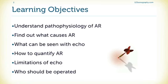The learning objectives are: understanding the pathophysiology of aortic regurgitation, finding out what the causes are, what can be seen with conventional two-dimensional echo and with color, how to quantify aortic regurgitation, the limitations of echo, and what to do if you have a patient with aortic regurgitation.